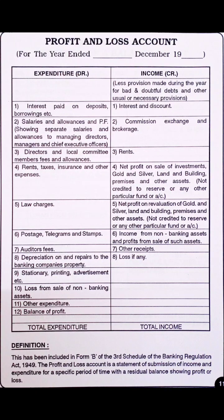Next is the profit and loss account, which is very simple — if it comes you can score very well since you have also studied it in accounts. On the left-hand side always note expenditures and on the right-hand side income. Expenditure side includes: interest paid on deposits and borrowings, salary and allowances, PF, directors and local committee members' fees and allowances, law charges, postage, telegrams, auditor fees, depreciation, stationery, printing, advertisement, and other expenditures. Income side includes: commission, exchange and brokerage, rent, loss if any, other receipts, income from non-banking assets, and profit from sale of such assets.